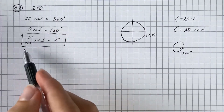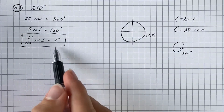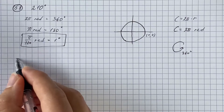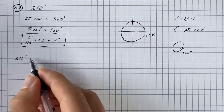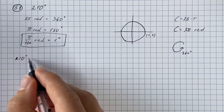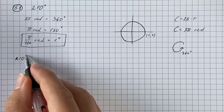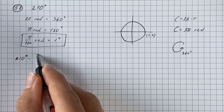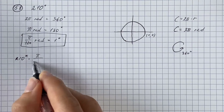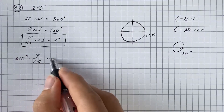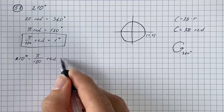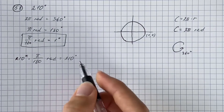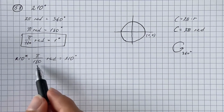We multiply both sides of the conversion formula by 210, giving us 210 times π over 180 radians equals 210 degrees. Now we simplify the fraction.